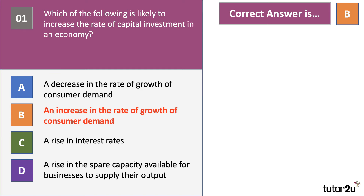A is the reverse of B — a higher interest rate increases the cost of borrowing for businesses, therefore likely to lead to less investment. And if there's more spare capacity, then businesses have less need to invest in new capital.